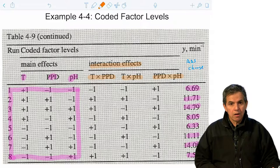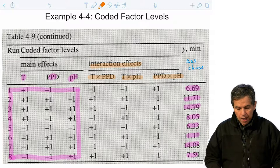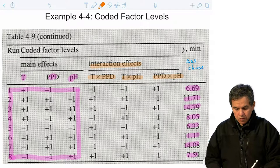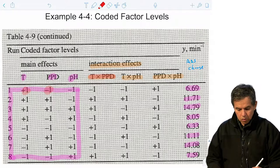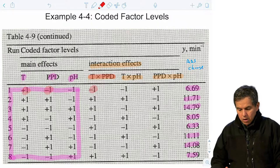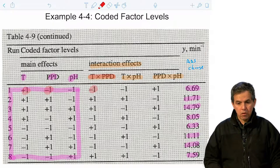Something new in this particular table is what we call interaction effects. Interaction effects consider the possibility that some of the factors — such as temperature and concentration of PPD, temperature and pH, or PPD concentration and pH — may have an effect on the outcome and bias the optimization. When we do a 2 to the k experimental design, we need to consider these interaction effects as well. To complete the table, we do simple math: for temperature and PPD, we take the value of each and multiply them, so plus 1 times minus 1 equals minus 1.